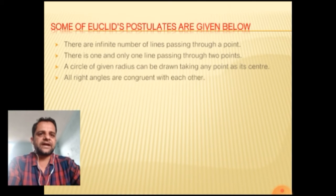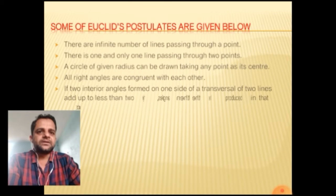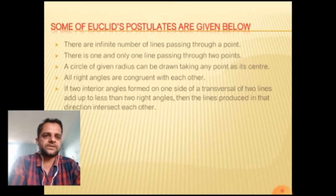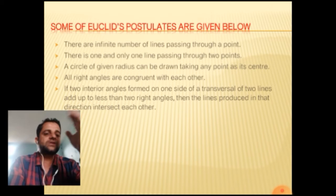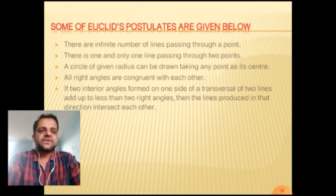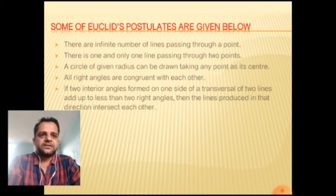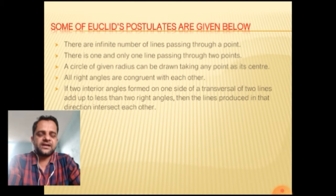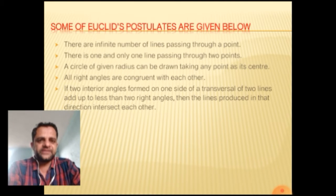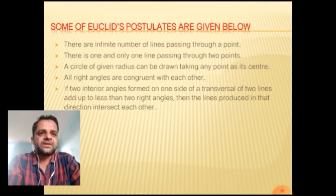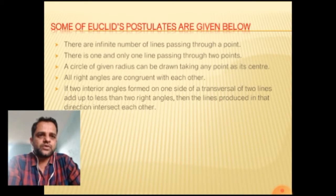Fourth: all right angles are congruent with each other. Fifth: if two interior angles are formed on one side of a transversal cutting two lines, and those angles add up to less than two right angles, then the lines produced in that direction will intersect each other.